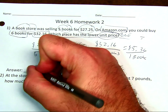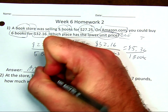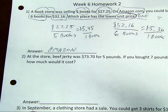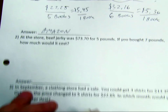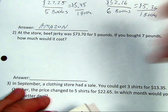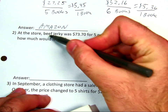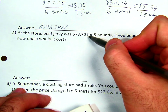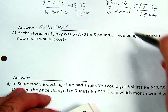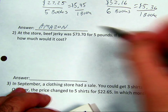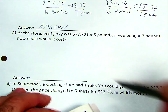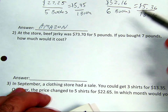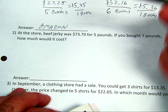I can see from here that the bookstore has a higher price than Amazon, so Amazon has the lower unit price. Now there are other problems we can solve with this. The next one says: at the bookstore, beef jerky was $73.70 for five pounds. If you bought seven pounds, how much would it cost?